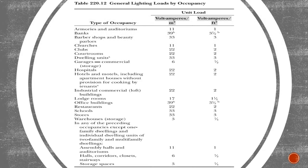Step one: our general lighting load. We're going to Table 220.12, take the square footage of our building and multiply it by our volt-amp amount. The only thing to keep in mind is that this is specific to the type of occupancy. Since we're doing a warehouse, we go down that column to 'warehouse for storage' and across to see one-quarter volt-amp per square foot, which is much less than our dwelling unit was. So for step one: 10,000 times 0.25 equals 2,500 volt-amps.